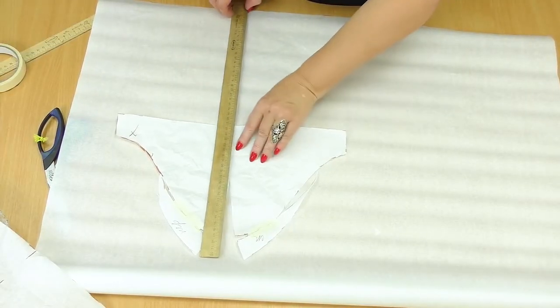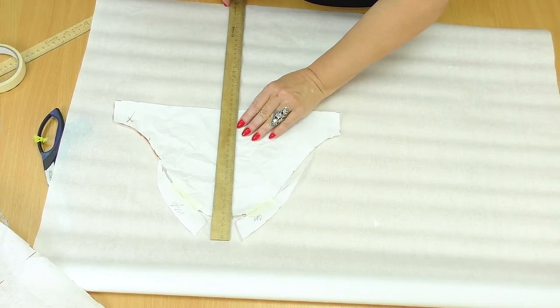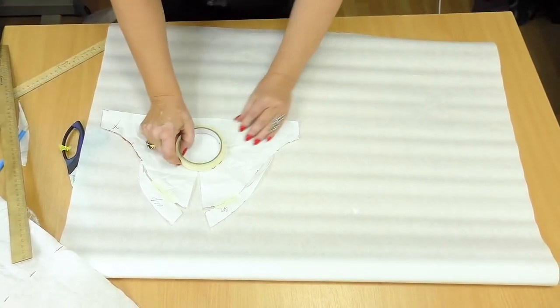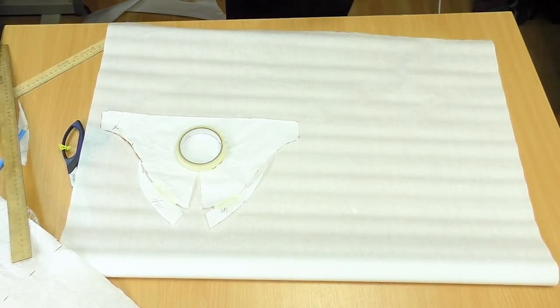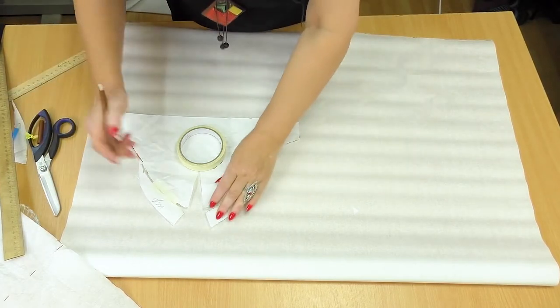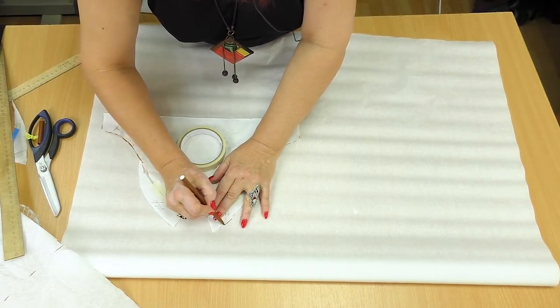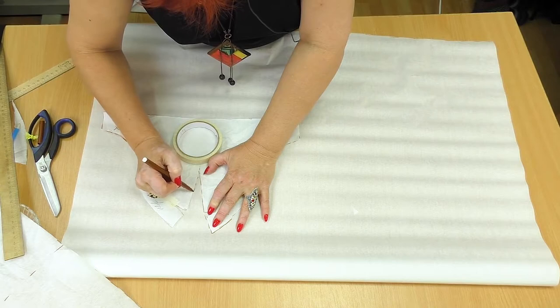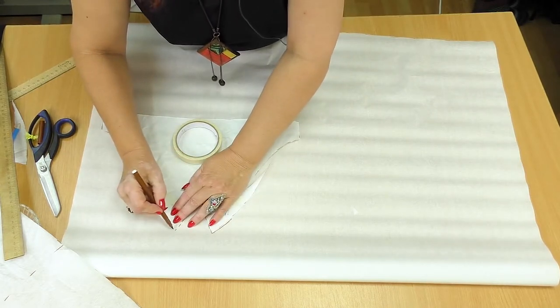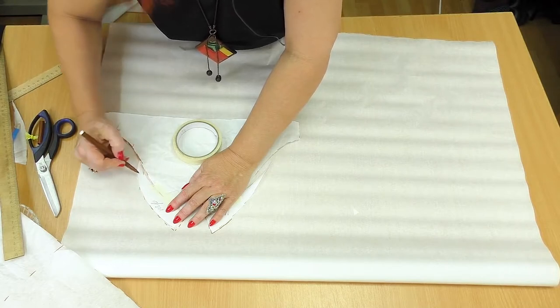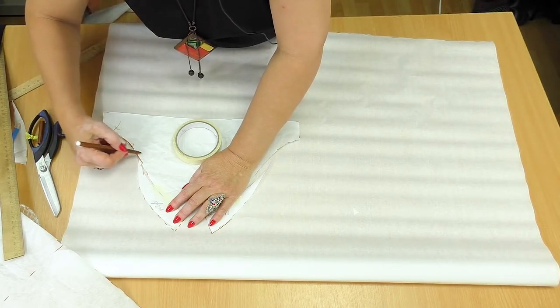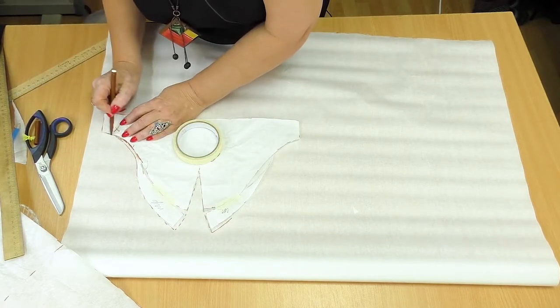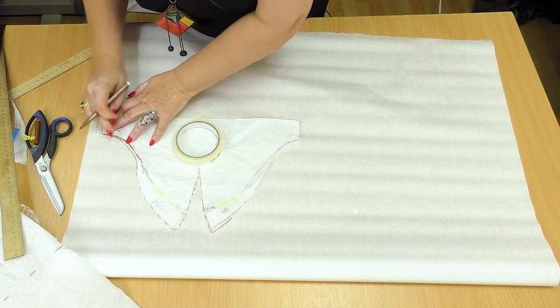For you to understand how it looks like. The sleeve is about 47 centimeters long. Kind of a three-quarter sleeve. I'll draw the sleeve here. Be very attentive. I'll transfer the sleeve. We don't need the angles. So I make them smooth.